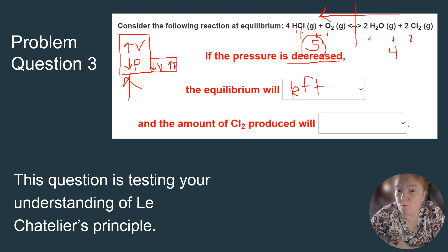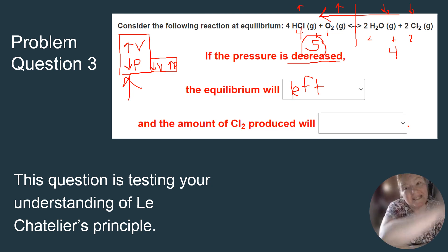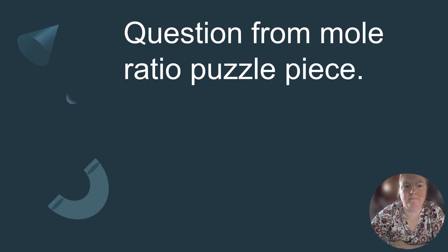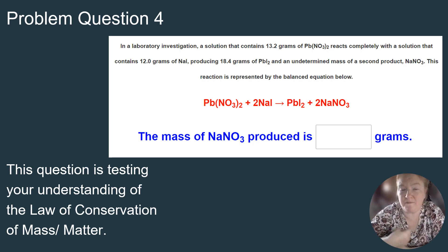When the equilibrium shifts to the left, I use up products and make reactants. So the amount of Cl2 produced will decrease. Now let's look at a question from the mole ratio puzzle piece to make sure we understand it completely.